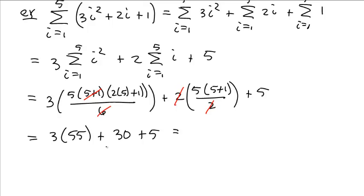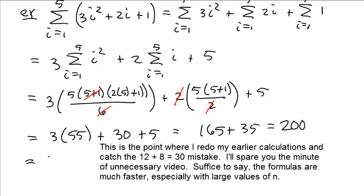3 times 55 is 150 and 15 is 165 plus 35 is 200. Wait a second. What did I do wrong? When you plug in 1, we got 3. Summation i equals 1 up to 5.